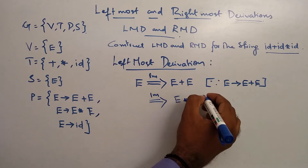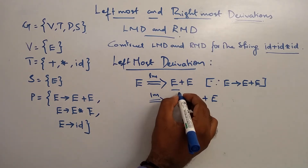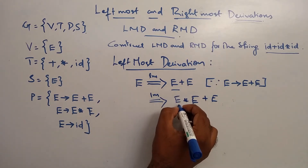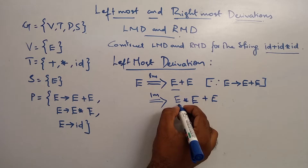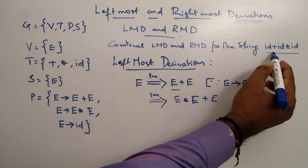E plus E — after applying E tends to E plus E, we get E plus E.